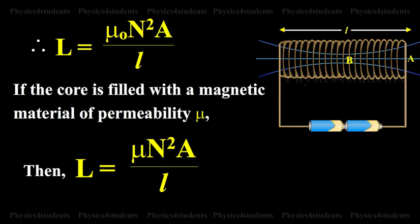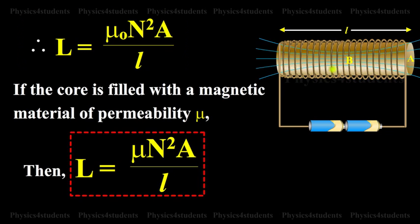If the core is filled with the magnetic material of permeability mu, then L equals mu N squared A by L.